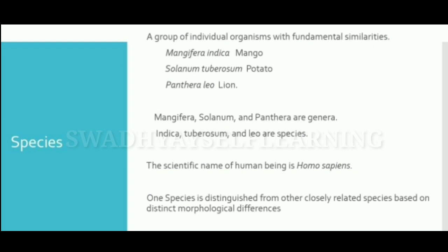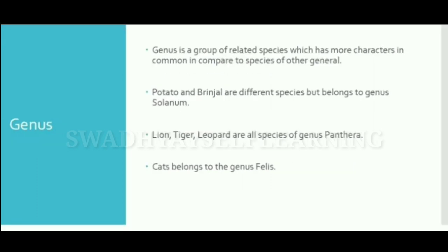Species is a group of individual organisms with fundamental similarities. Mangifera indica, Solanum tuberosum, and Panthera leo are the scientific names of mango, potato, and lion. Mangifera, Solanum, and Panthera are the genera, while indica, tuberosum, and leo are the species. One species is distinguished from another closely related species based on morphological differences.